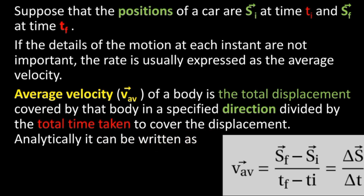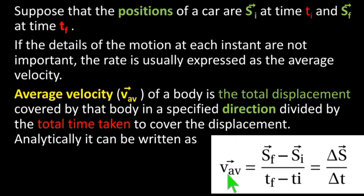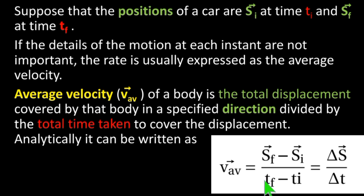The average velocity is equal to final position minus initial position over final time minus initial time. This can also be written as the change in position or displacement over the change in time.